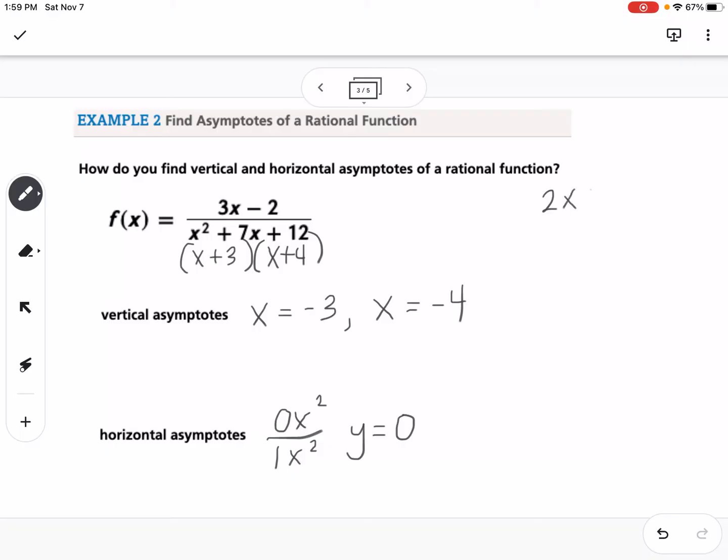For other examples, if I had 2x plus 1 over x minus 5, the biggest power of x is just x to the first power. We have 2x over 1x, which would be 2, so the horizontal asymptote would be 2. If the power in the numerator is bigger, like x squared plus 1 over x minus 5, that would be 2x squared over 0x squared, which is undefined, so we would say no horizontal asymptote.